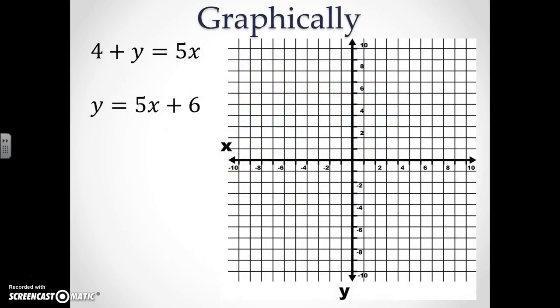First let's look at linear equations graphically. The system of equations on the left hand side has to both be written in terms of y equals mx plus b, also known as slope-intercept form. Since the first equation is not written in slope-intercept form, we have to subtract the 4 from both sides in order to get y equals 5x minus 4.